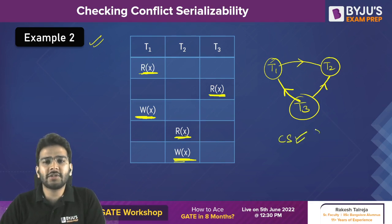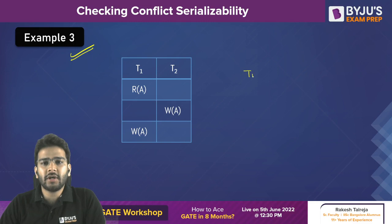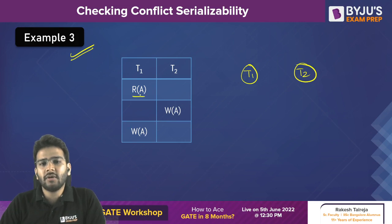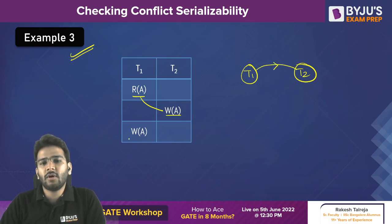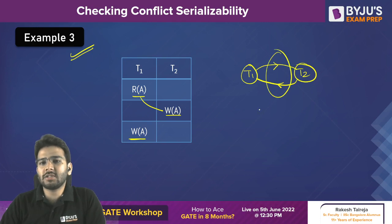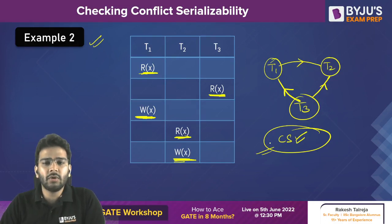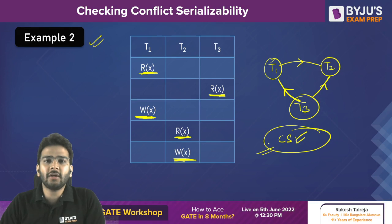Example three has two transactions T1 and T2. We find a read-write conflict from T1 to T2 — draw that edge. Then we find a write-write conflict from T2 to T1 — draw that edge. Now a cycle is present in the precedence graph, so we can clearly say this schedule is non-conflict serializable.